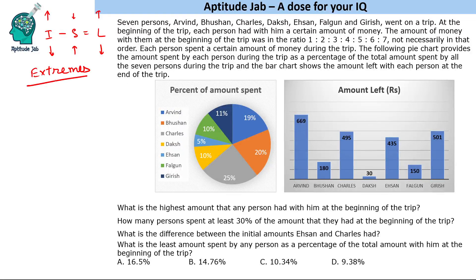In all such questions, start with extreme cases. Daksh has only 30 rupees left, and his expenditure percentage is also not very high — second least after Ihsan. Since his spending is less but his final amount is also less, his initial income must have been the least. So Daksh must be the person with ratio 1x, i.e., let his income be x.